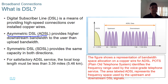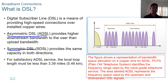Symmetric DSL has the same download and upload bandwidth. Organizations that have web servers typically avail of symmetric DSL because they need to regularly update server content by uploading files, so they need higher upload bandwidth. That is their best DSL option — Symmetric DSL.